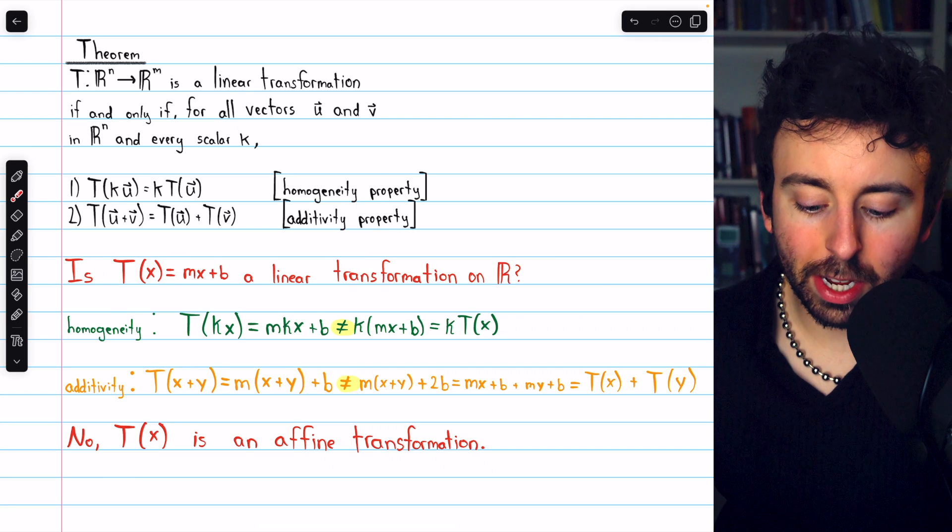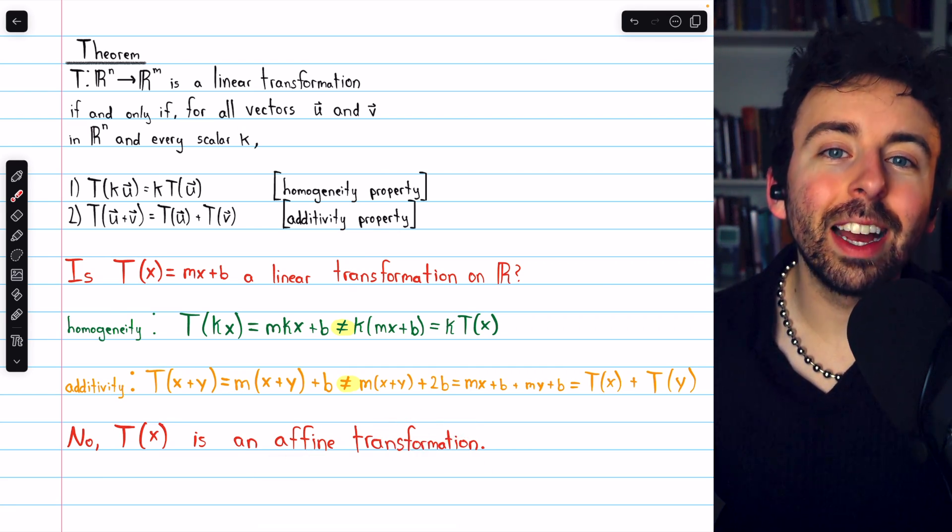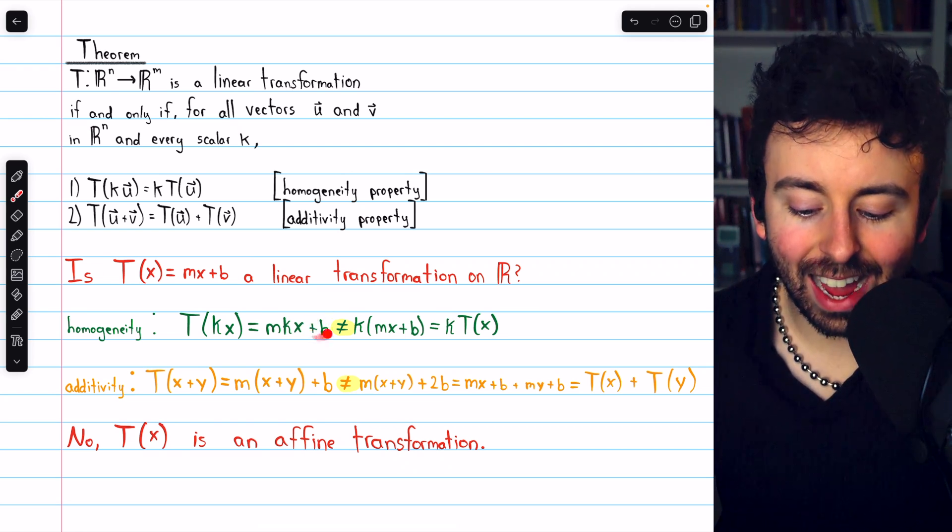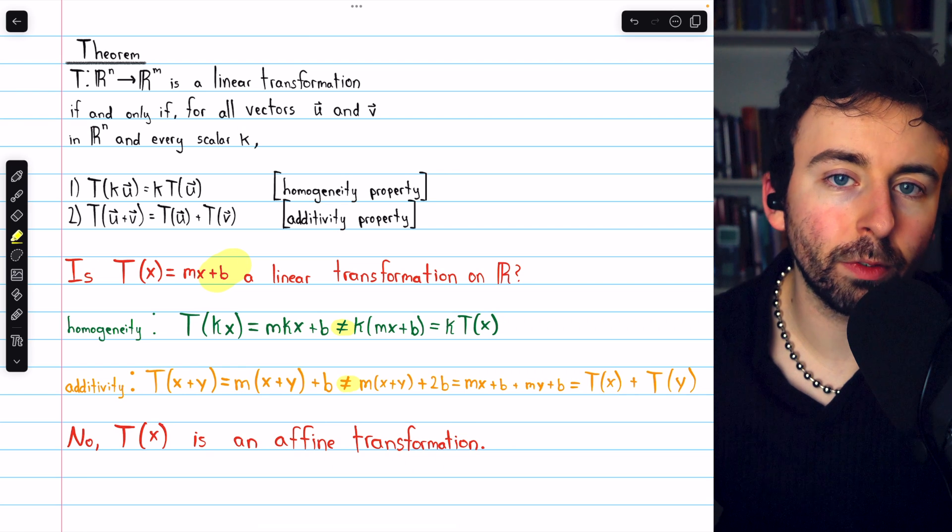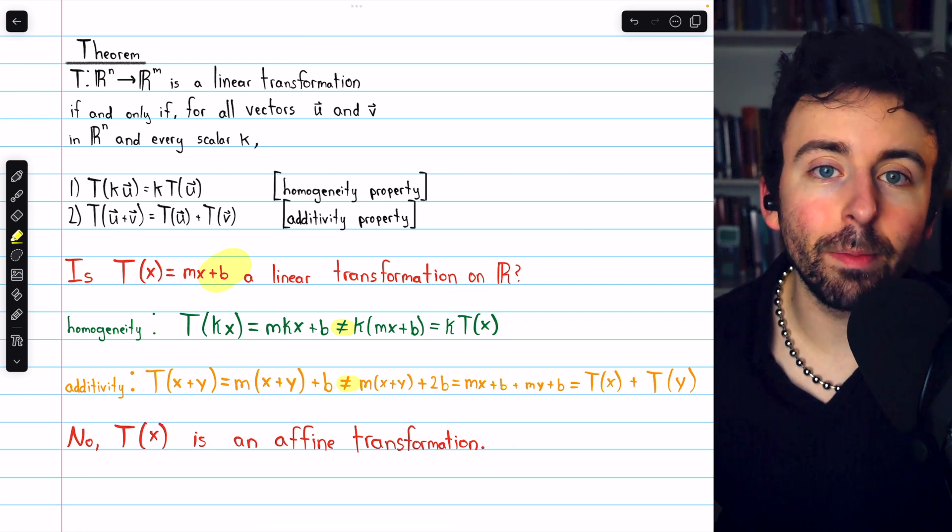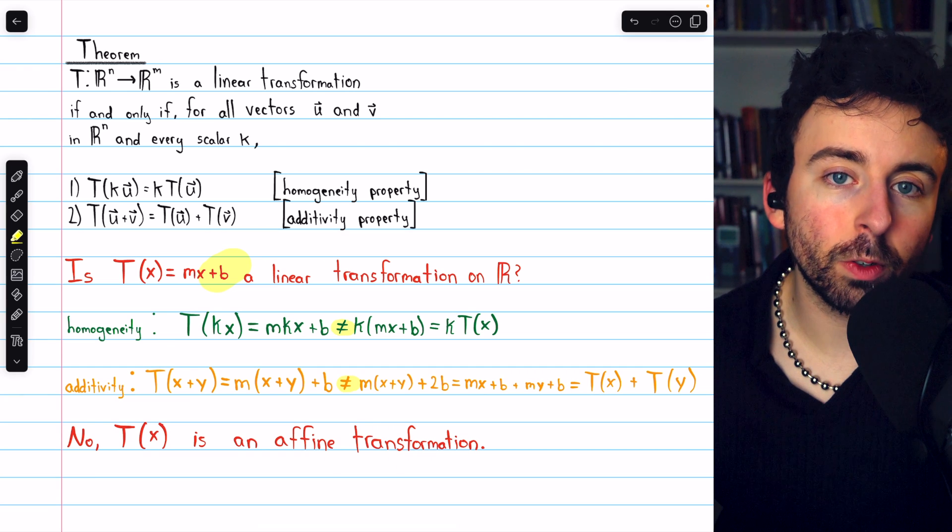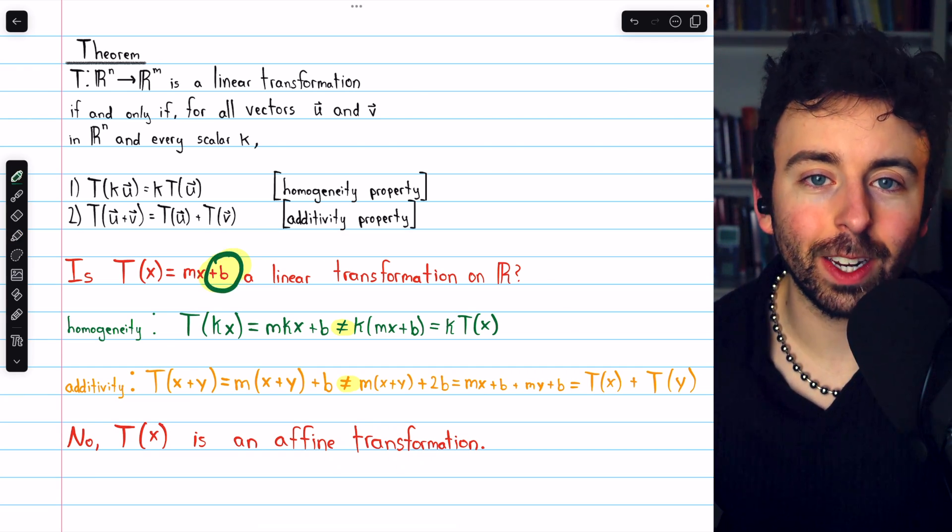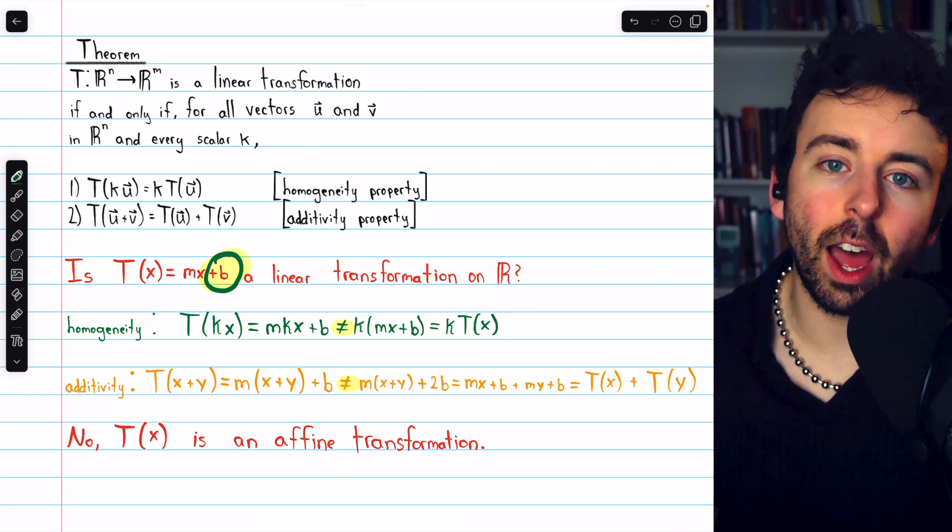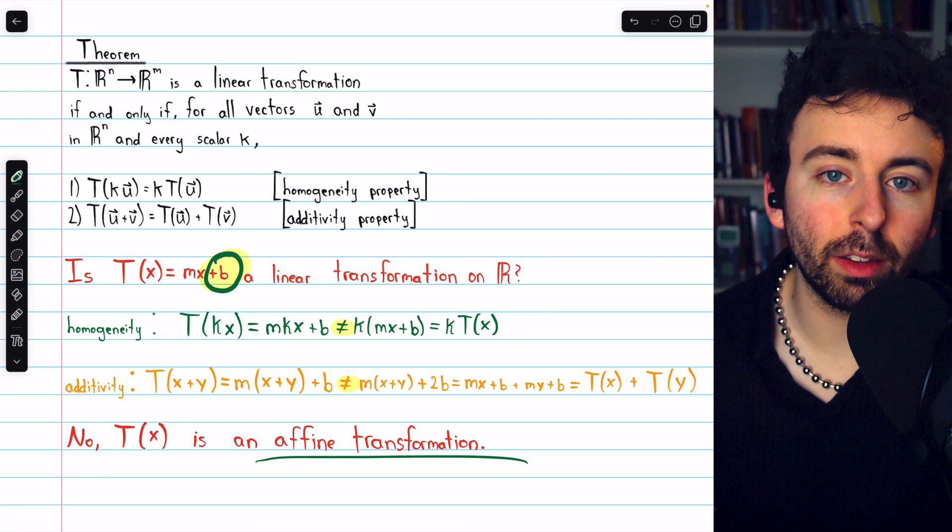This is actually what we call an affine transformation. It is a linear transformation except for the fact that it has this shift. If we didn't have the plus b that's in this transformation, it would certainly be a linear transformation. The fact that it's a linear transformation plus what we would call a translation—that's what this plus b is, a translation up of b units—that's an affine transformation.